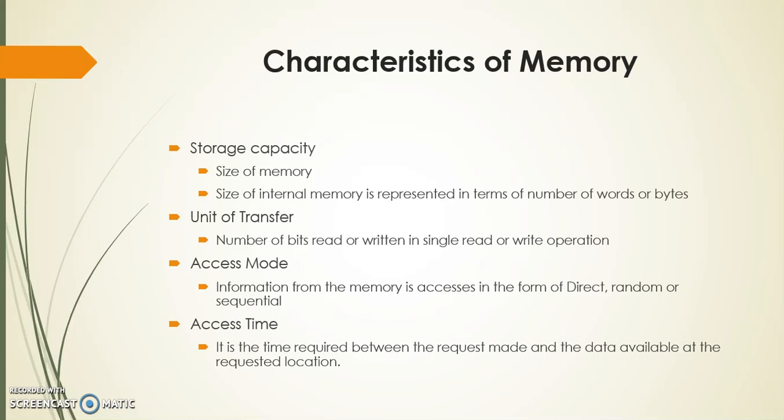The second characteristic is unit of transfer. The unit of transfer is how many bits at a time we are going to read or write from memory — that is, how much data we are going to transfer from CPU to memory or memory to CPU. For main memory or internal memory, the normal unit of information transfer is equal to the word length of the processor, which depends upon the data line in the system.